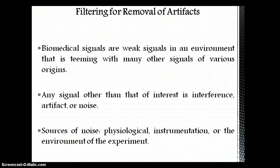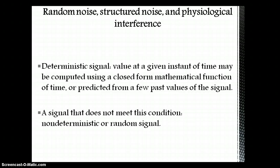The main sources of noises in biomedical signals are physiological noise, instrumentation noise, or environmental noise. Random noise, structured noise, and physiological interference are the main three different types of noises involved in biomedical signals.